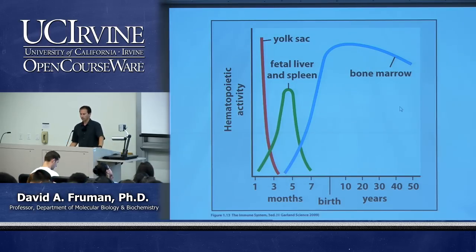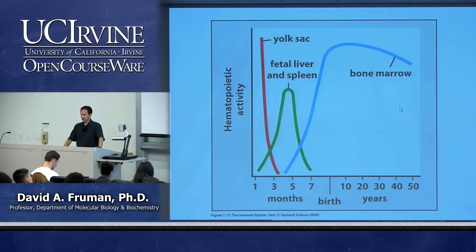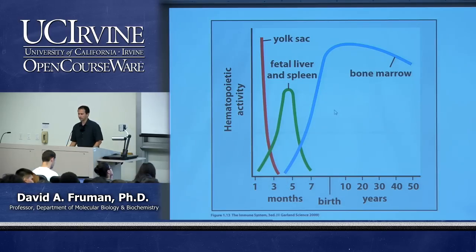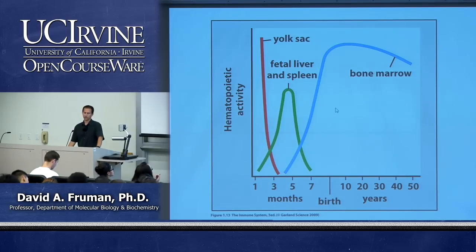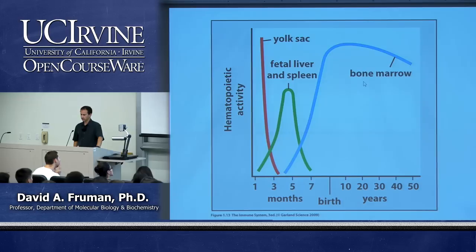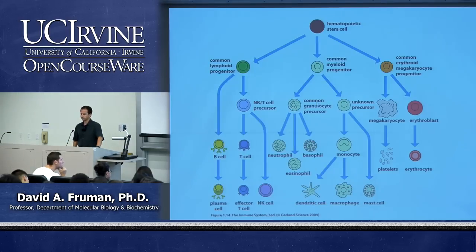Today's lecture is going to be a parts list of the major cell types and organs involved in immune responses. Let's get started and talk about how the immune system begins with hematopoiesis, in which cells develop into all cells of the immune system as well as red blood cells and platelets. This occurs at different places at different times: in early fetal life it occurs in the yolk sac, then transfers to the fetal liver and spleen, and before birth transfers into the bone marrow, where it continues throughout life.